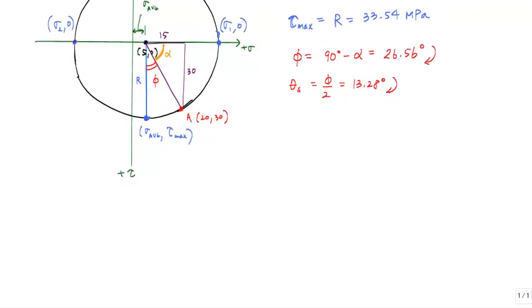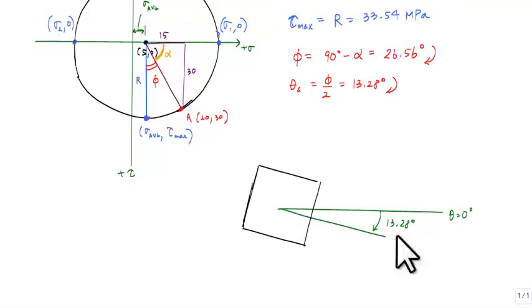Now I can draw my maximum in-plane shear stress state. I start with my line representing theta equals zero degrees, which is horizontal. I draw my line here to 13.28 degrees. I have a positive shear stress on this face. This is like rotating the x-axis to plus x prime. My y-axis follows suit, so this is plus y prime. On this face, I have a shear stress that's positive 33.54. On the plus x face, it's in the plus y direction, completing the shear stresses.